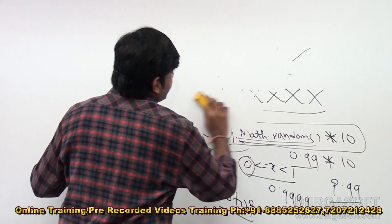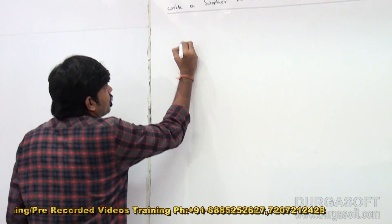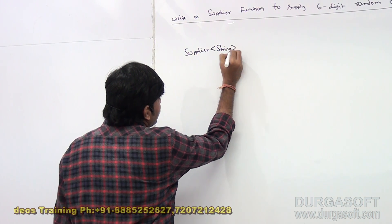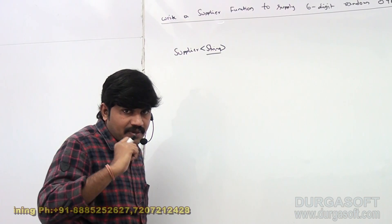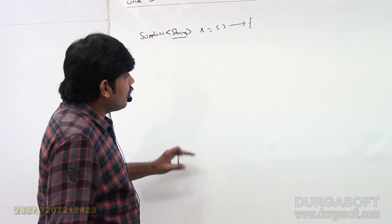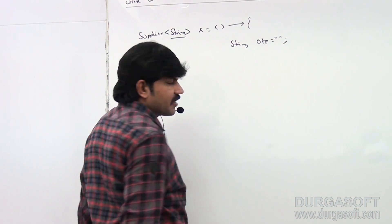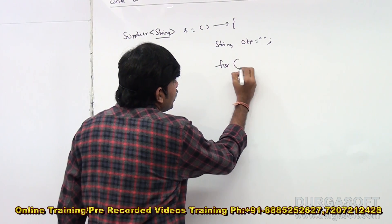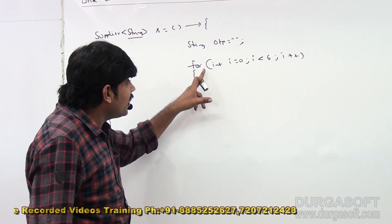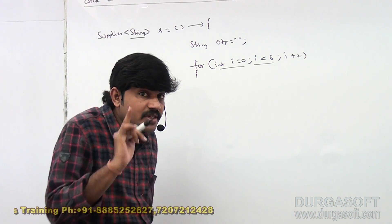Our requirement is a six-digit OTP. I'm using a Supplier of String. String OTP is initialized to an empty string. Then a for loop: int i = 0, i < 6, i++ — so this for loop is going to execute six times, because I need six digits.